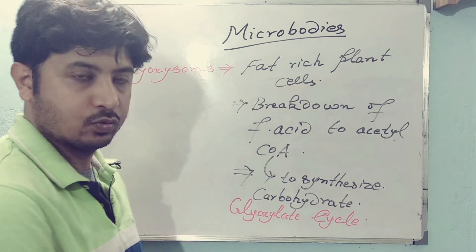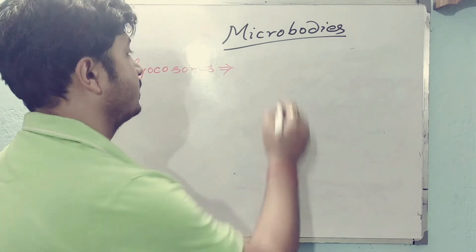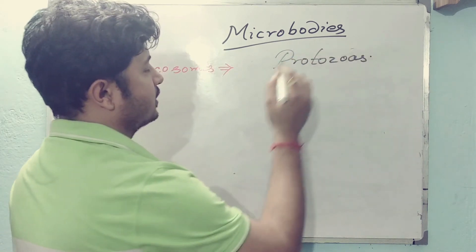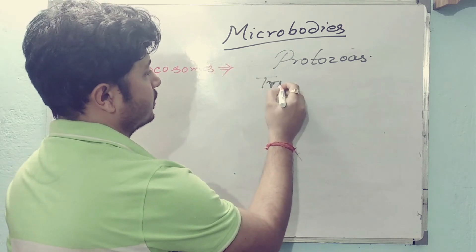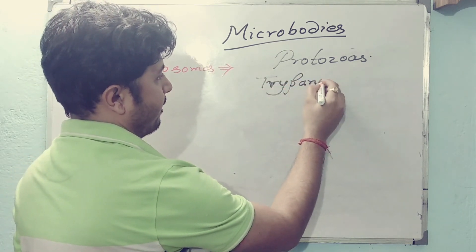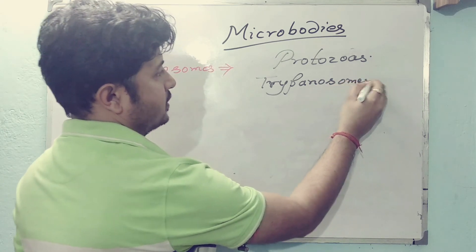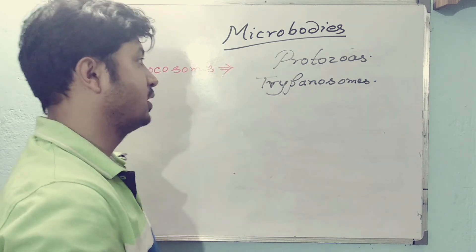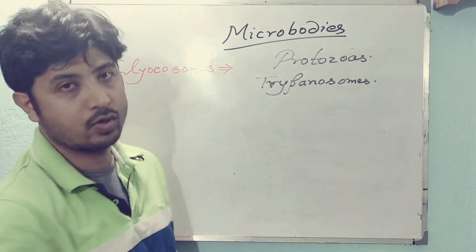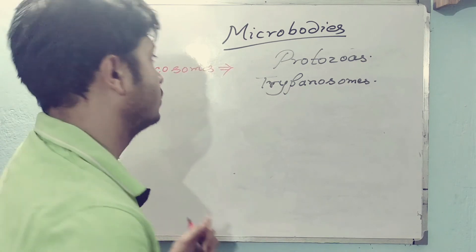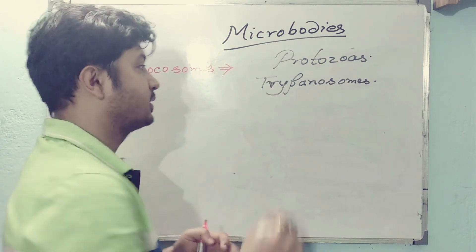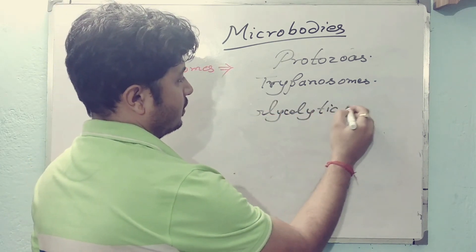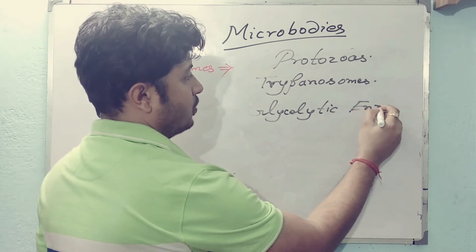The next microbody is glycosomes. Glycosomes are present only in protozoa. One example is trypanosomes, which is a protozoa that causes diseases like Chagas disease or sleeping sickness. This kind of protozoa contains microbodies called glycosomes.